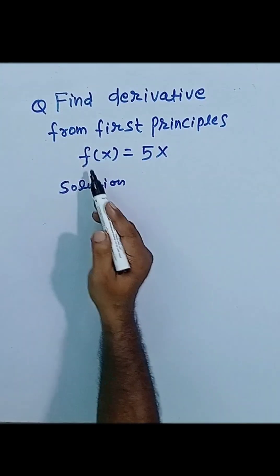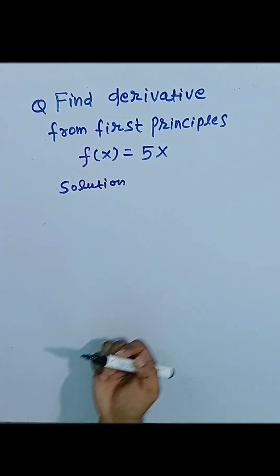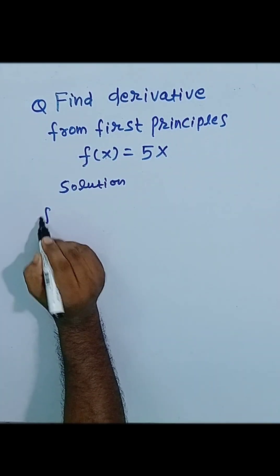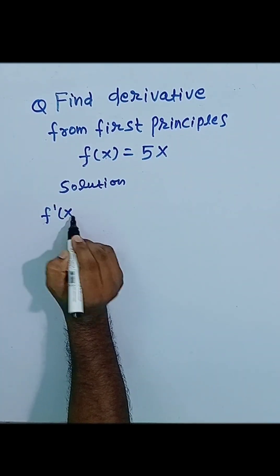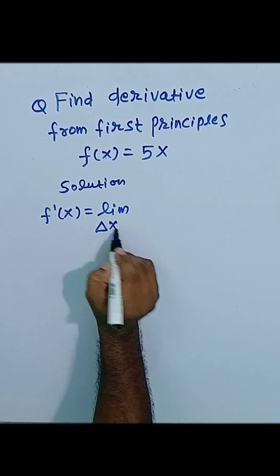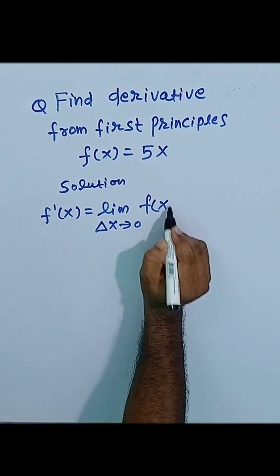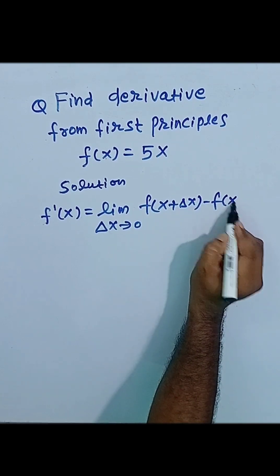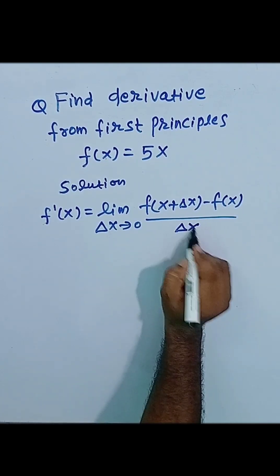Find the derivative from first principles. The function given is f(x) equal to 5x. By the definition of first principles, the derivative of f(x), that is f dash x, will be equal to limit delta x tends to 0, f(x plus delta x) minus f(x), divided by delta x.